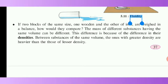Between substances of the same volume, the ones with greater density are heavier than those with lesser density. When you take two blocks of the same size — one wooden and one iron — and weigh them on a balance, the iron will be heavier. The volume is the same but the mass is different. This is known as density.